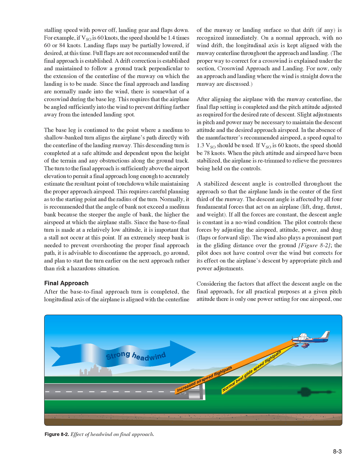Final Approach. After the base-to-final approach turn is completed, the longitudinal axis of the airplane is aligned with the centerline of the runway so that any drift is recognized immediately. On a normal approach with no wind drift, the longitudinal axis is kept aligned with the runway centerline throughout the approach and landing. After aligning the airplane with the runway centerline, the final flap setting is completed and the pitch attitude adjusted as required for the desired rate of descent.